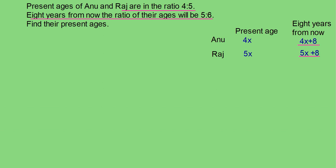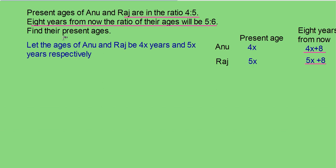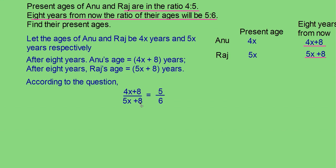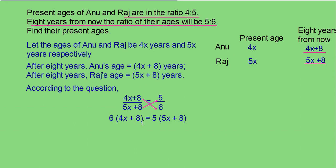Now let us write in steps. Let the age of Anu and Raj be 4x years and 5x years respectively. Then after 8 years, Anu's age will be 4x + 8 years, and Raj's age will be 5x + 8 years. According to the question, (4x + 8) / (5x + 8) = 5/6 — that is the ratio of ages after 8 years is given as 5:6. Now cross multiply: 6 × (4x + 8) = 5 × (5x + 8). Remove the brackets — multiply 4x by 6, 8 by 6, 5x by 5, and 8 by 5. You get 24x + 48 = 25x + 40.